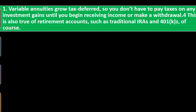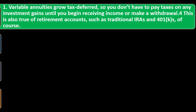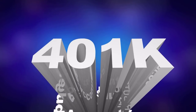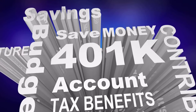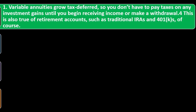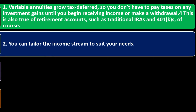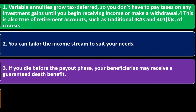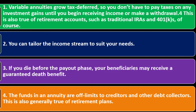Advantage number one: variable annuities grow tax-deferred, so you don't pay taxes on investment gains until you begin receiving income or make a withdrawal — similar to an IRA or 401k plan. Advantage number two: you can tailor the income stream to suit your needs. Advantage number three: if you die before the payout phase, your beneficiaries may receive a guaranteed death benefit, which is somewhat like a life insurance component.